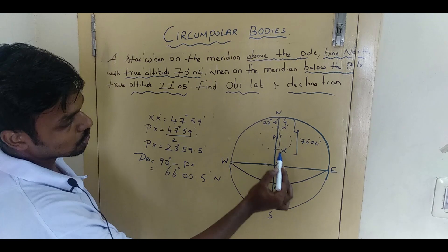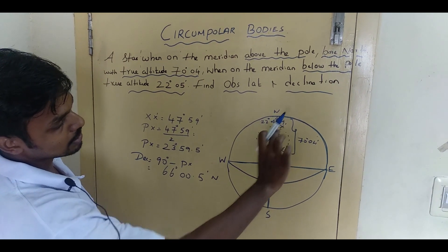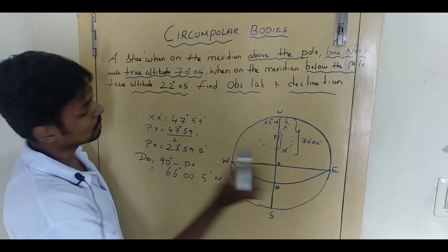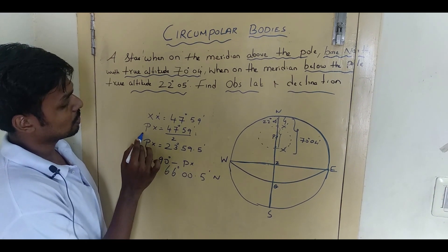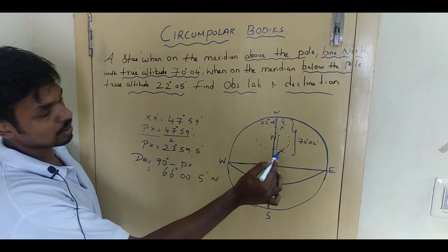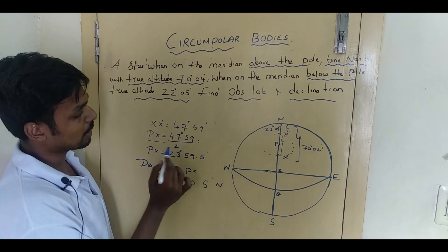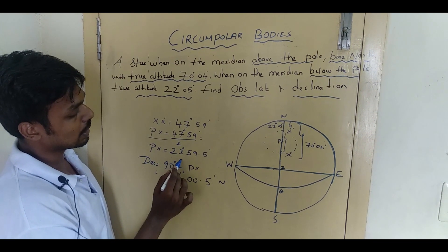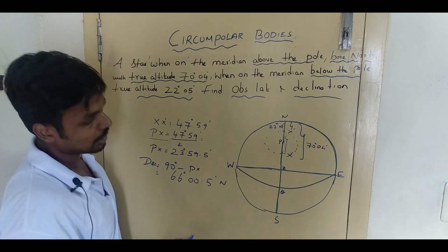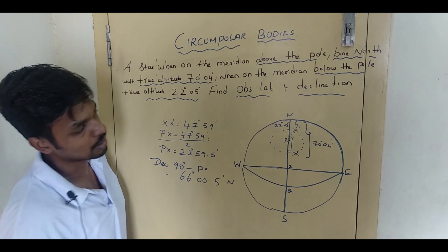Now I need to find pole to object — PX. Since I know XX', half of this will be PX. So the pole distance — pole to celestial body — divided by two gives PX equal to 23 degrees 59.5 minutes.